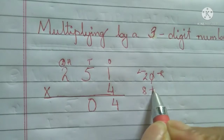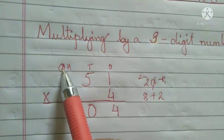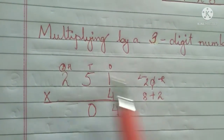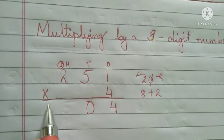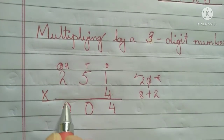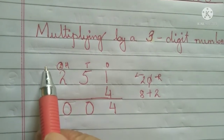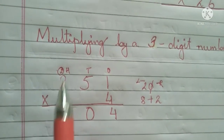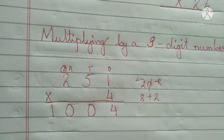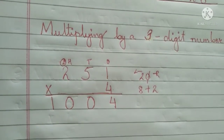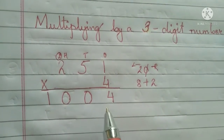Four multiplied by two equals eight, and eight plus two — you need to add when there is a carry over — so eight plus two equals ten. Write zero here; the one you write here as well since there is no number in the thousands place. That completes multiplying with a one-digit number.